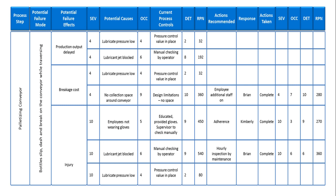For each of those causes there could be multiple controls or checkpoints in the system. For the employee wearing gloves, the only control we have is that we educated him, gave him the gloves, and the supervisor is monitoring this manually — that's a weak control, so I would give it a 9. On the other hand, for lubricant pressure being low, you could use automation to alert when the pressure is low or even stop the entire line if pressure goes beyond a particular value — that's a strong control, so you give it the least detection value.